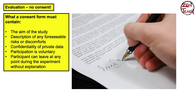The second point on the consent form is that you need to have some description of any possible risks or discomforts participants might experience. That's just fair — you have to tell them what to expect. If they decide it's acceptable, they can still sign. If they don't like it, they don't have to participate. At least they were informed.